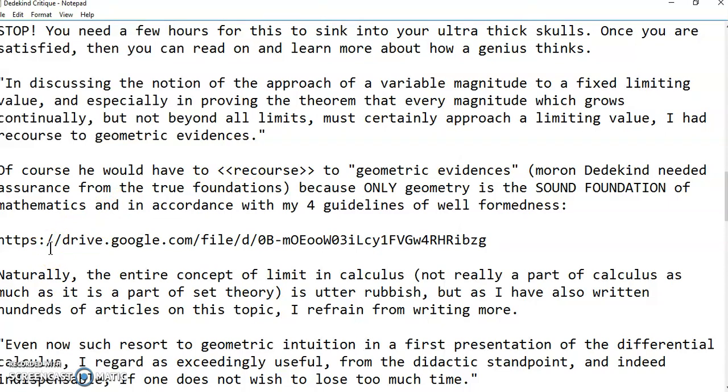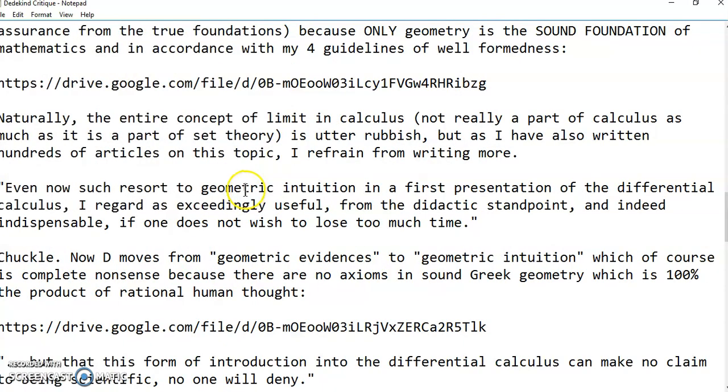Of course, he would have to recourse to geometric evidence because being the fool that he was, he needed reassurance or assurance from the true foundations of mathematics, which is geometry. Geometry is the only sound foundation of mathematics from which we derive everything: algebra, calculus, mathematical statistics, and anything else useful that we do in science. Of course, this happens in accordance with my four guidelines of well-formedness because there hasn't ever been anything substantial or meaningful published on what it means for a concept to be well-formed. And I'll give you a link to that right over here. Naturally, the entire concept of limiting calculus, which is not really a part of calculus as much as is a part of set theory, is utter rubbish, as I've proved in the new calculus.